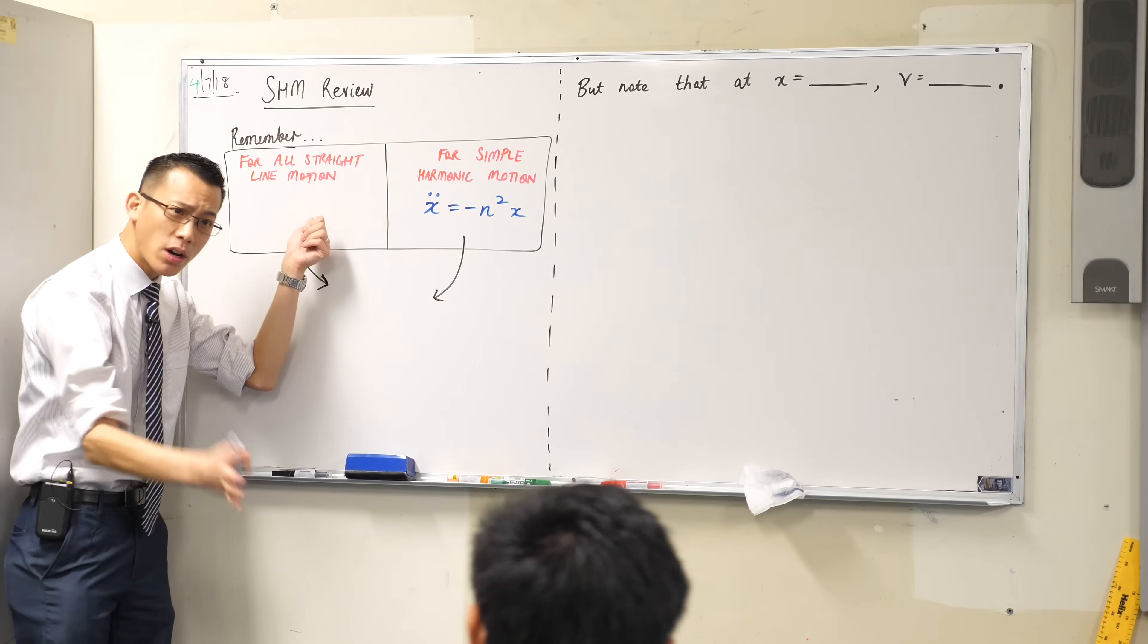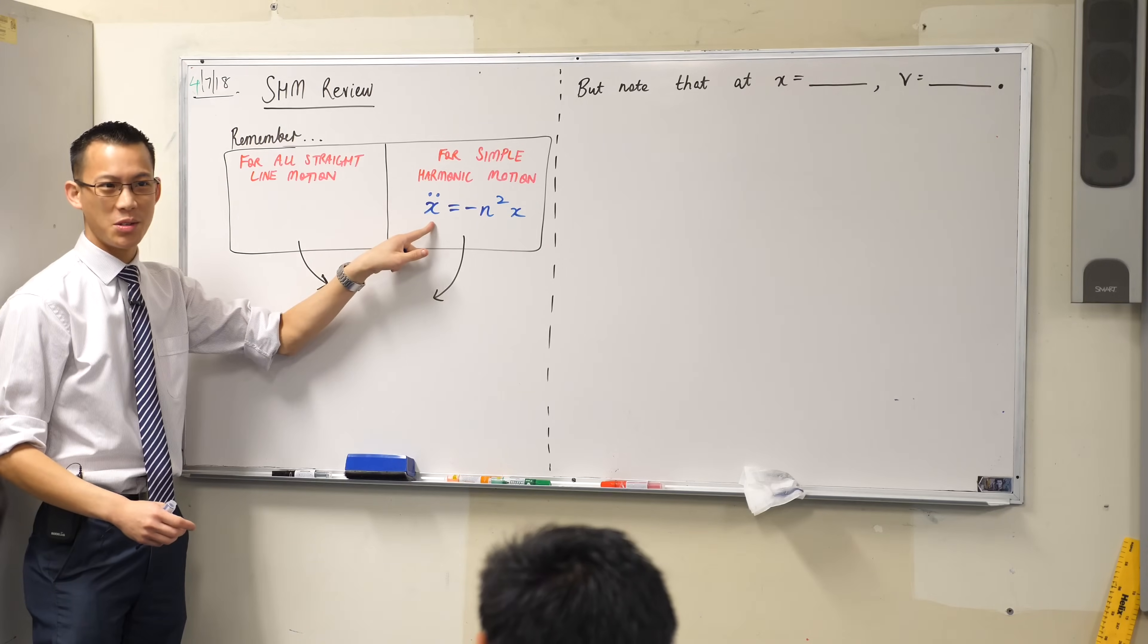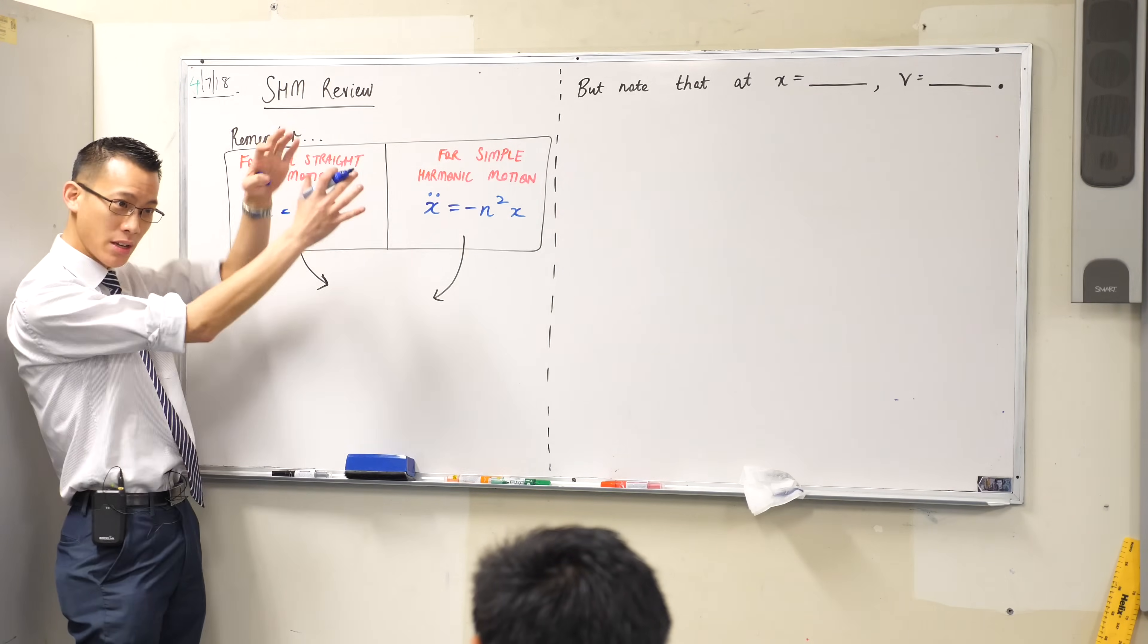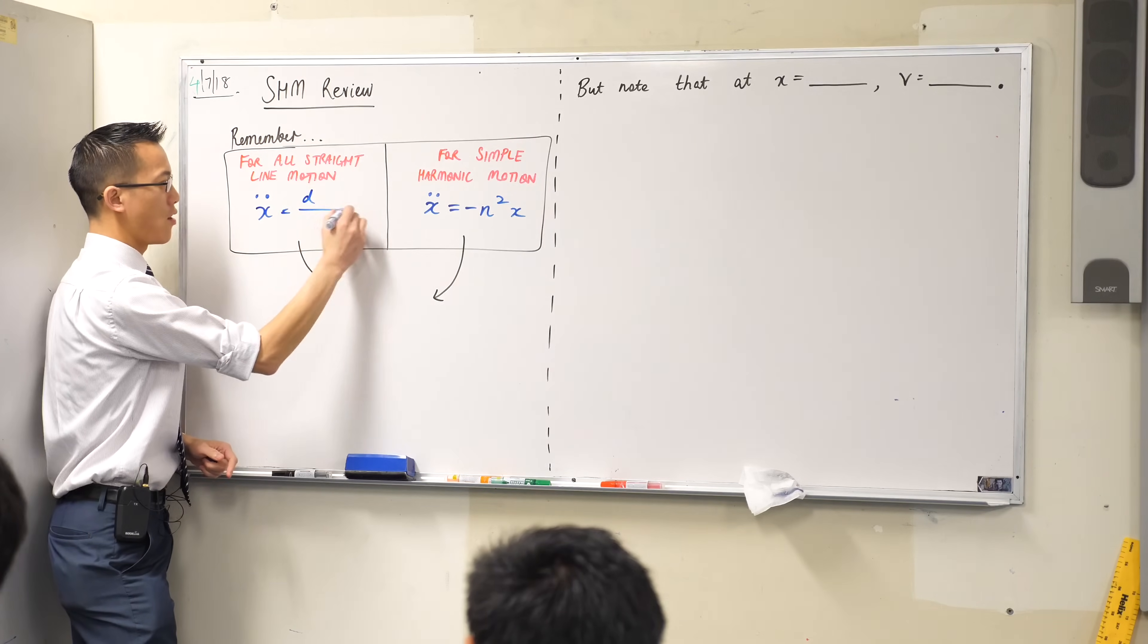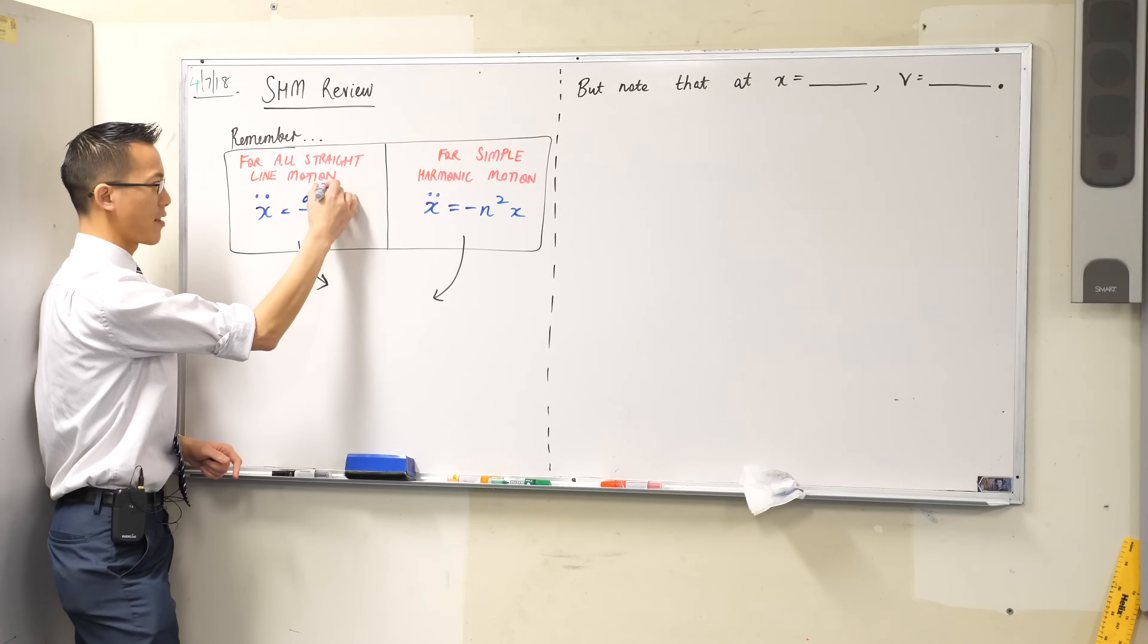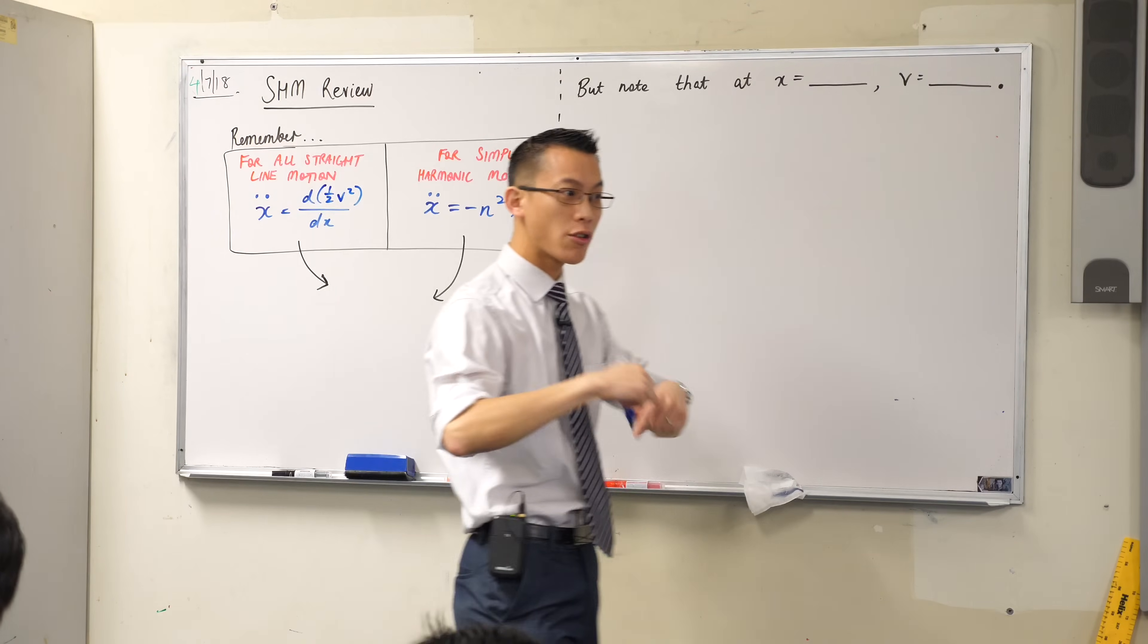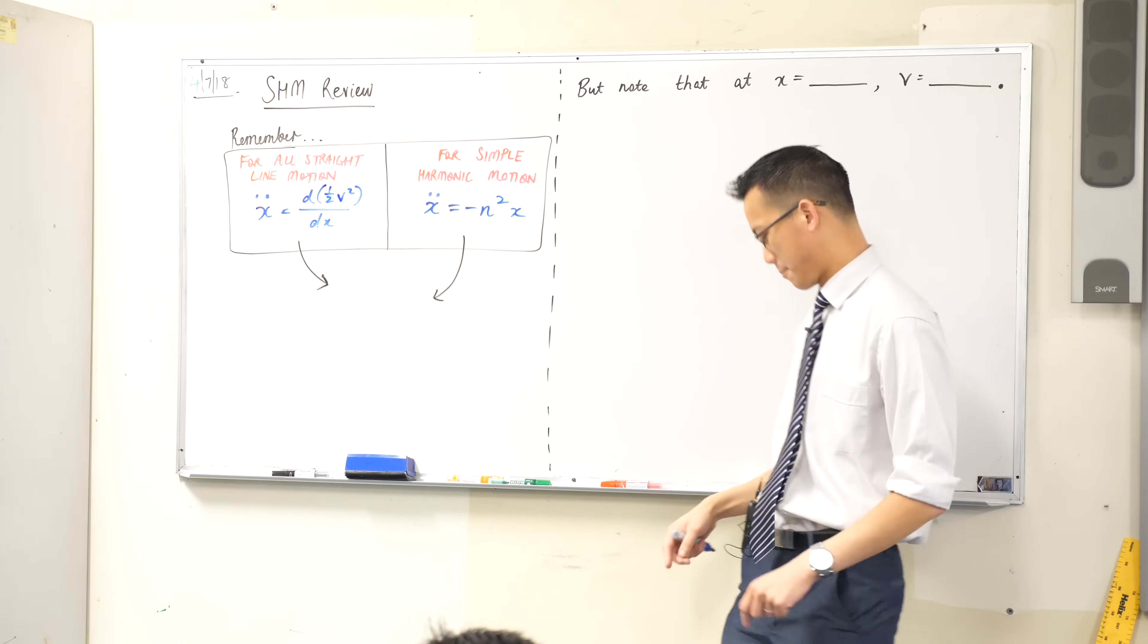But for all kinds of straight line motion, we have another differential equation that also has to do with acceleration. Do you remember what it was? It's on the reference sheet, it's this weird one which we had to prove and we went through this long awkward proof. Yeah, it's the one with d on dx of what is this weird thing that goes in there. Do you remember? It's half v squared.